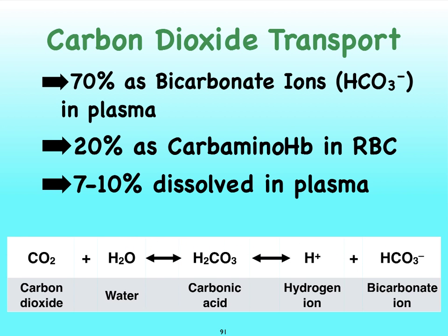And you might wonder why that needs to happen. Notice these hydrogen ions — sometimes we need to fix the pH levels of our blood. We can increase or decrease the pH of our blood by changing the numbers of hydrogen ions. If we need to decrease the pH of the blood, we can allow this reaction to push to the right. On the other hand, we can get rid of the hydrogen ions by making it move to the left. We're going to learn how we can make these reactions shift.